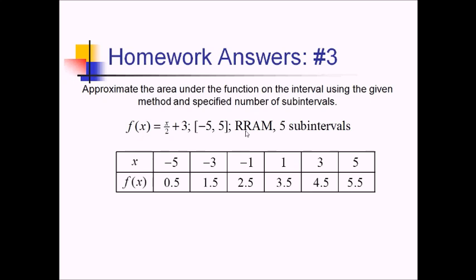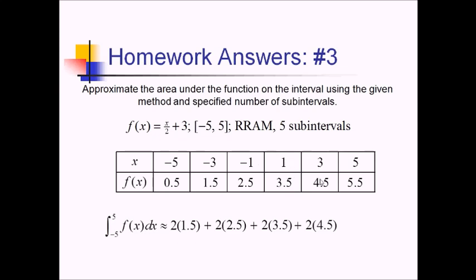Since this is RRAM, we're going to use the right endpoint of each rectangle. So our first interval, we have a base of 2 from negative 5 to negative 3, and we're going to do 2 times a height of 1.5. So the integral from negative 5 to 5 is approximately equal to 2 times 1.5, plus base of 2 times 2.5, base of 2 times 3.5, base of 2 times 4.5, and then 2 times 5.5. Since we're multiplying all of these by 2, we can add the numbers inside together and then multiply by 2. So 1.5 and 2.5 is 4, this will make it 7.5, this becomes 12, and then finally we've got 17.5. Doubling that, we get 35.